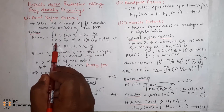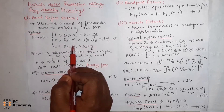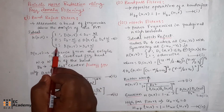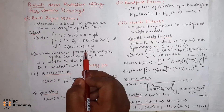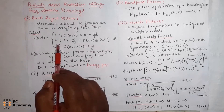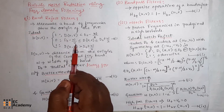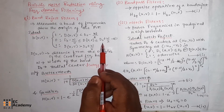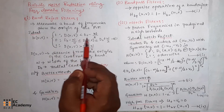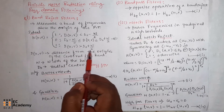h(u,v) = 0 for d(u,v) between d0 minus omega/2 and d0 plus omega/2, and h(u,v) = 1 for d(u,v) greater than d0 plus omega/2. So the band reject filter removes frequencies between d0 minus omega/2 and d0 plus omega/2 (where the value is 0), and allows frequencies outside that band.